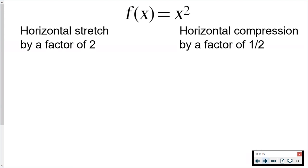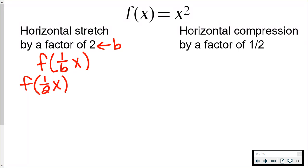Now I'll demonstrate horizontal stretch and compression — this one can be a little tricky, so be careful when you see the word horizontal. B is the letter used for the factor. With a horizontal stretch factor of 2, replacing B gives the notation f of (1/2 x). This notation tells me that all of the x's in my original function need to be replaced with 1/2 x.